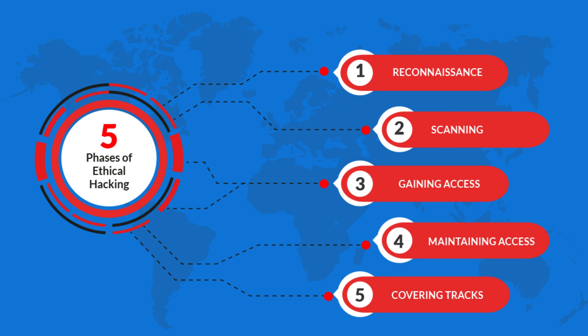One of the most critical phases is exploitation. Ethical hackers use their skills to exploit identified vulnerabilities, gaining access to the system. It's essential to remember that they do this with explicit permission from the system owner. After gaining access, ethical hackers assess the extent of the compromise and document their findings. This information is used to strengthen system defenses and prevent future attacks.